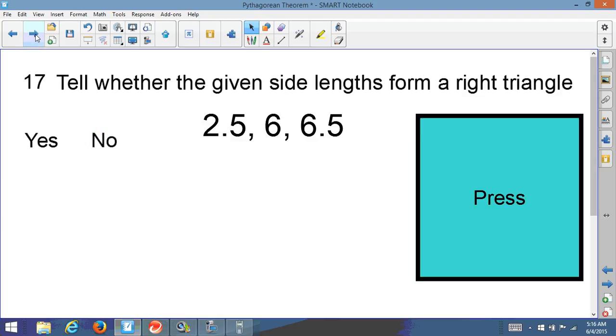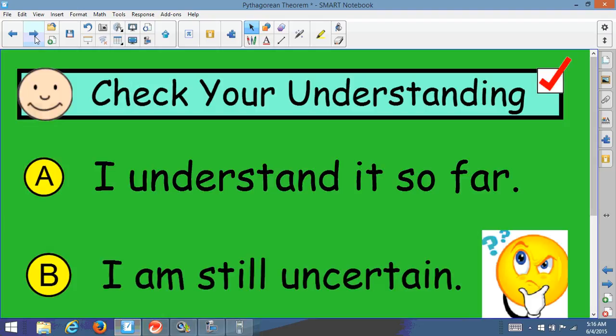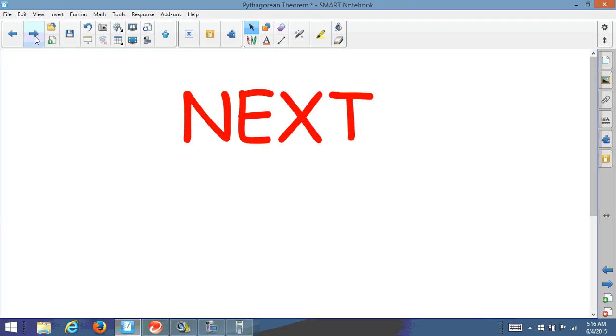So here is one for you. Tell whether it is a right triangle again. You have to see your sides, which one is the longest, given 2.5, 6, and 6.5, and use your Pythagorean theorem. See if it is a right triangle or not. Good question. Check your understanding, see if you understand it so far. If you are uncertain, write down your questions, bring them in.